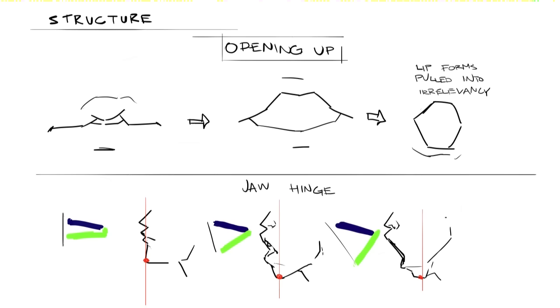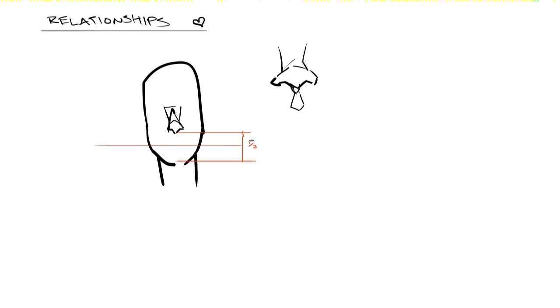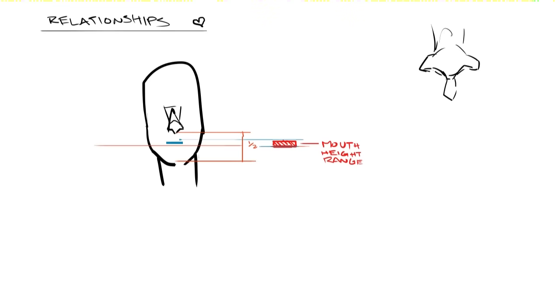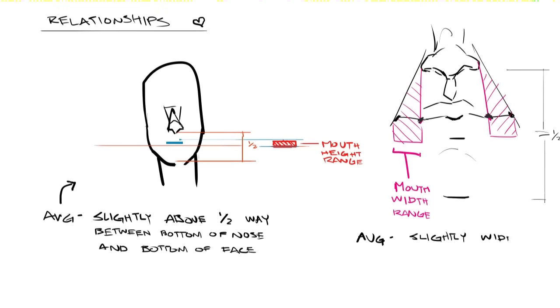That will do it for my main notes on structure — I'm not going to go over teeth, but you can do quick studies of skulls to improve your understanding of them. Let's talk about relationships — where should you place your mouth? The mouth is usually located somewhere right above halfway between the bottom of the nose and the bottom of the face. For the width of the mouth, usually making it slightly wider than the width of the nose will be fine.